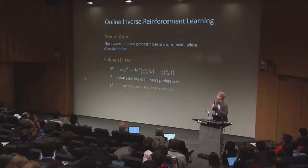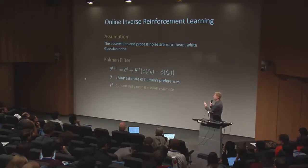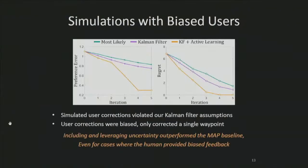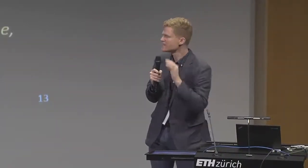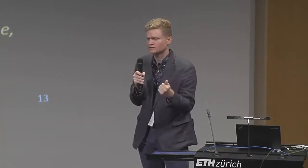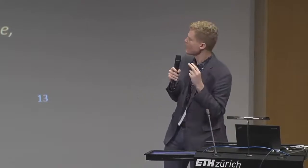Of course, this method works quite well when the human's corrections are in line with our noise assumptions. But how does our approach perform when the human's corrections don't match these underlying assumptions? Here we compare: one, robots that only learn the most likely human preferences; two, robots that use our Kalman filter approach to include uncertainty; and three, leveraging this Kalman filter approach with active learning. On the left, you see the preference error, which provides the difference between the true and learned human preferences, and on the right, we show the regret. In offline simulations, we found that leveraging and including uncertainty led to robots that outperform robots which only learn the most likely human preferences, even in challenging cases where the human provided noisy corrections that were both biased and non-Gaussian.